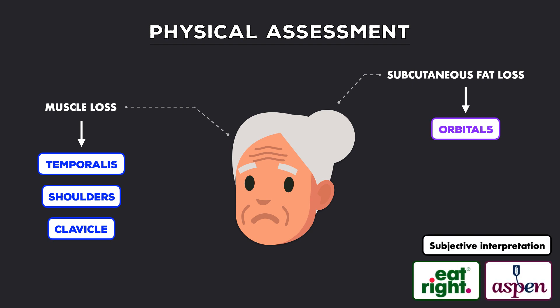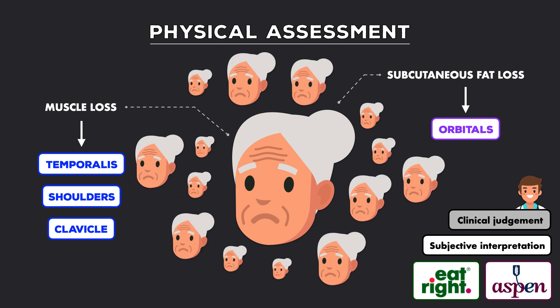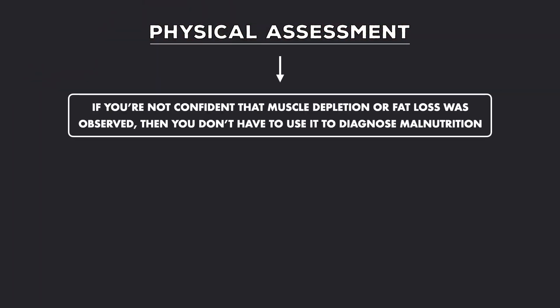One of the limitations of the Academy Aspen tool is that it relies on a subjective interpretation of what is mild, moderate, and severe fat and muscle loss — the dietitian needs to rely on their own clinical judgment to determine what they observed. Being able to do this with confidence comes after performing dozens, if not hundreds, of interviews and physical exams, so don't worry if you feel unsure about it. If you're not confident that muscle depletion or fat loss was observed, then you don't have to use it to diagnose malnutrition.